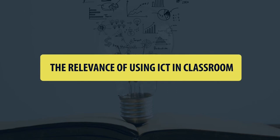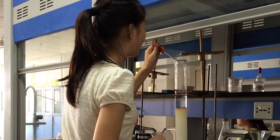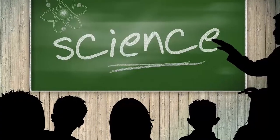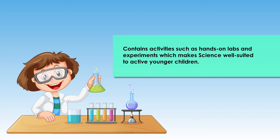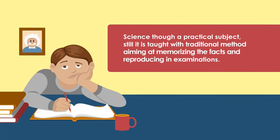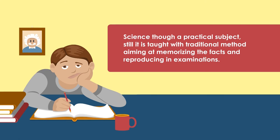We discussed the concept of ICT and its increasing importance in the field of education. Let's now proceed to the discussion of ICT as a learning resource, especially in science. School students are naturally curious, which makes science an ideal subject for them to learn. Science allows students to explore their world and discover new things. It is also an active subject containing activities such as hands-on labs and experiments, making science well suited to active younger children. Science is an important part of the foundation of education for all children. But unfortunately, science, though a practical subject, is still taught with traditional methods aiming at memorizing facts and reproducing them in examinations.